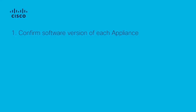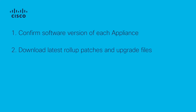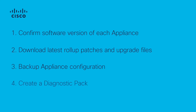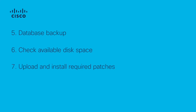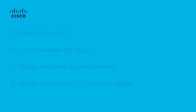This process consists of: confirm software version of each appliance is the same, download latest roll-up patches and update files, backup the appliance configuration, create a diagnostic pack, database backup, check available disk space, upload and install required patches, and upload and install version 7.5.0 software update.